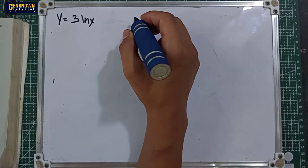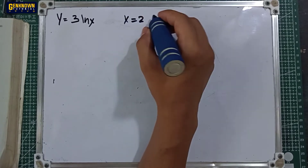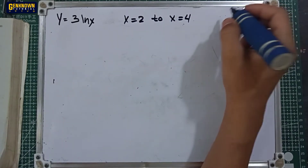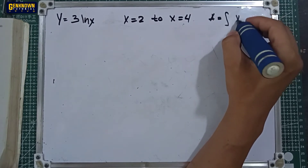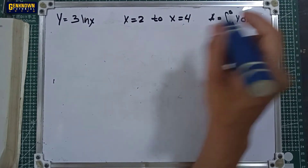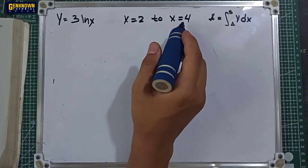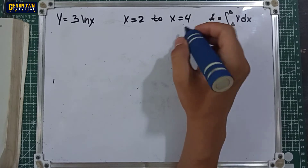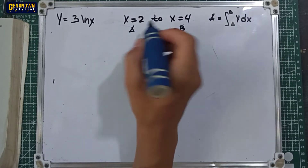The curve is defined from x equal to positive 2 to x equal to positive 4. Remember, the area is equal to the integral of y dx with upper limit b and lower limit a. From these two constants, we can easily identify that 4 is much higher than 2, so 4 is b and x equal to 2 is a.